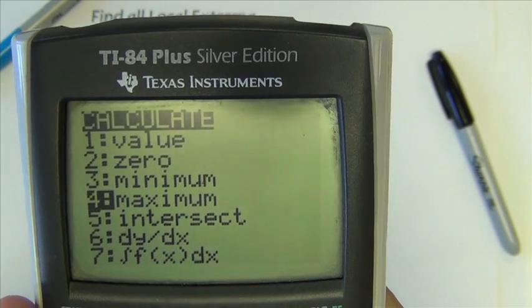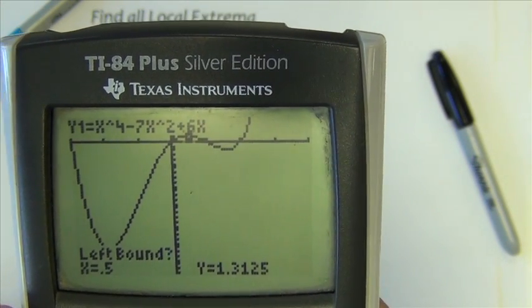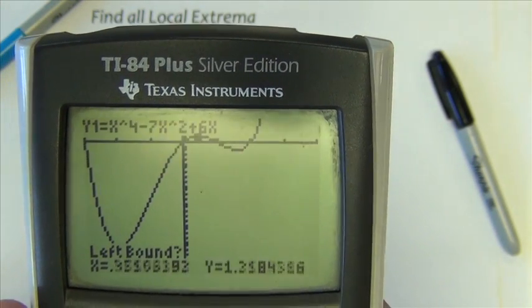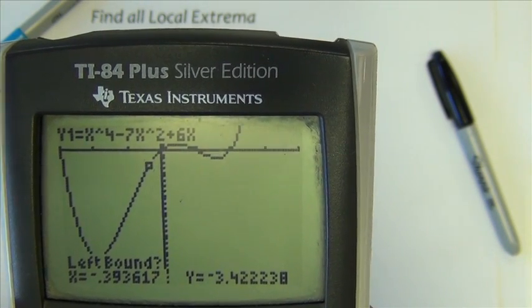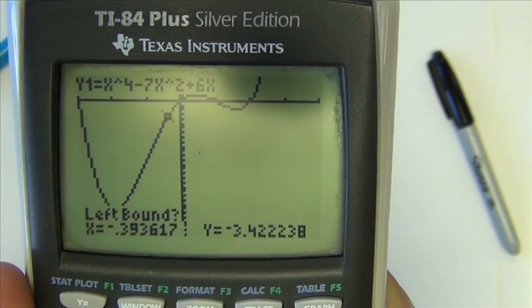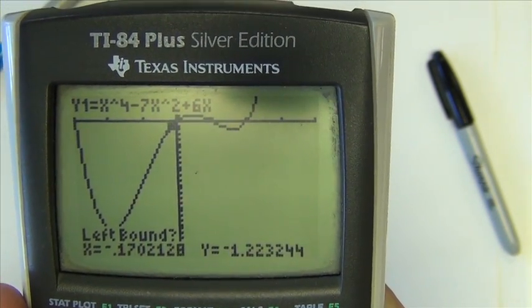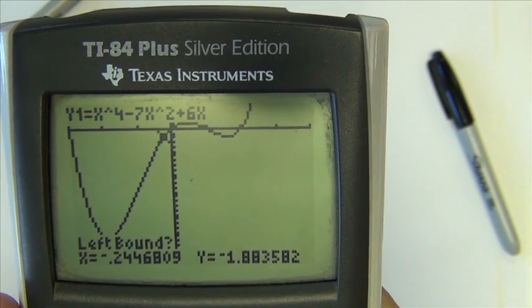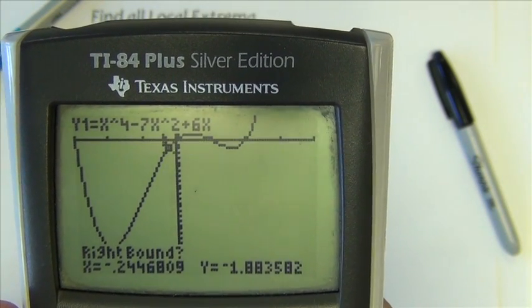And you can see the cursor flashing there, let me move it off the top so you can definitely see it. Notice on the bottom left of the calculator screen, it asks you for a left boundary. So it wants you to go to the left of that maximum. And when I do that, I hit enter.